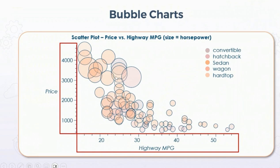Different types of cars are represented by different symbols. Convertible cars are represented by one symbol, hatchback by another, sedan cars are represented by yellow, wagon by another symbol, and hardtop by another. We can see that convertibles have maximum highway MPG, and hatchback has maximum price. So we can represent more than two variables in the form of bubbles, because each bubble will represent a quantity.